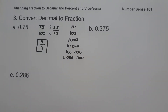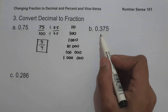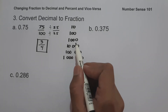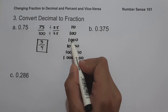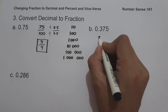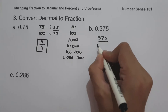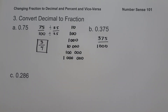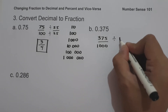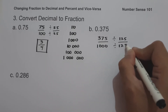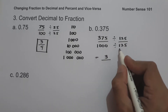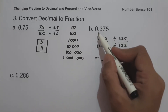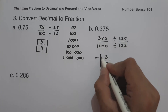On letter B, we have 0.375. Since we have three decimal places, we use 1,000 as our denominator — three decimal places correspond to three zeros. So this is 375 over 1,000. The greatest common factor between 375 and 1,000 is 125. So 375 ÷ 125 = 3 and 1,000 ÷ 125 = 8. So 0.375 in fraction is 3 over 8.